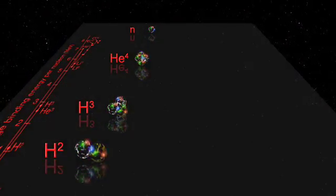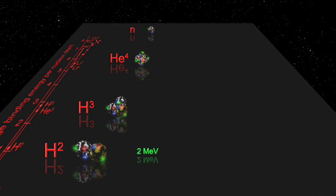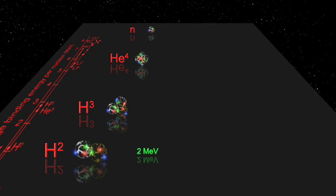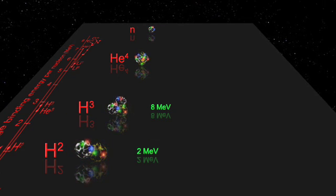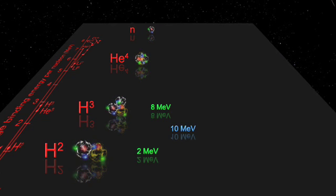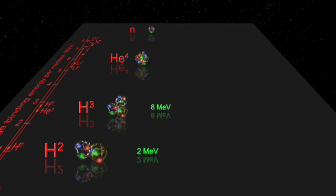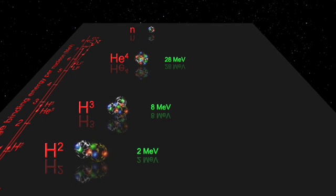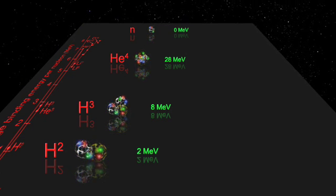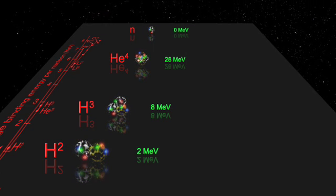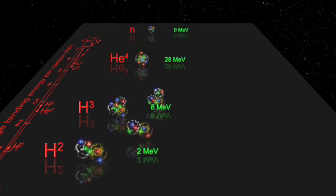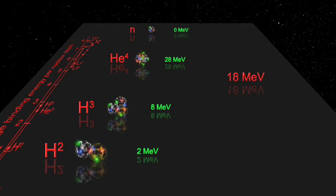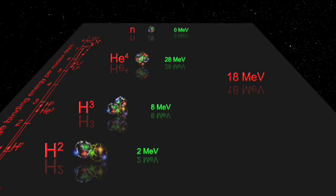Let's run the numbers and see how it works. The binding energy for deuterium is about 2 MeV. And the binding energy for tritium is about 8 MeV. So the total for the input items is 10 MeV. The binding energy for helium is 28 MeV. And the free neutron has zero binding energy. Subtracting the 10 MeV from the 28 MeV reveals that every time this fusion happens, we liberate 18 MeV of energy. And that's pretty good.